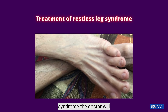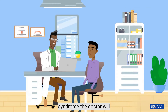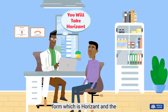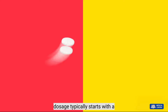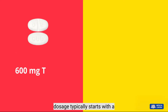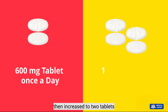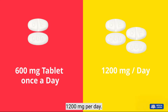For treatment of restless leg syndrome, the doctor will prescribe the extended release form, Horizont. The dosage typically starts with a 600 mg tablet once a day, then increased to two tablets per day, for a total dosage of 1,200 mg per day.